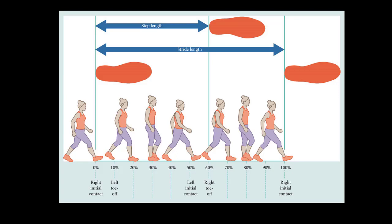First, we can talk about a step and a stride. A step occurs from initial contact of one foot to initial contact of the other foot. As illustrated in the drawing here, we have initial contact of the right foot to initial contact of the left foot, indicating a step. And the difference between those two initial contacts is the step length.